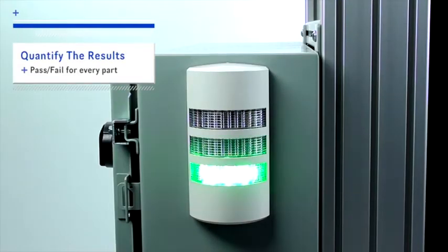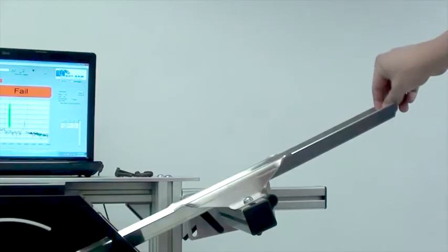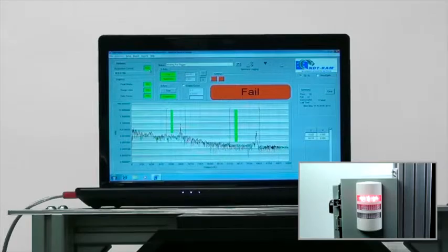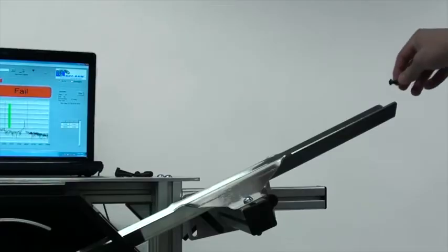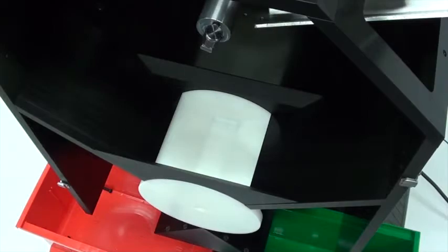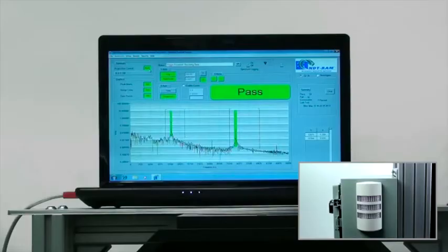This turnkey system provides two different visual indications of the part's performance. A light tower mounted on the side of the system will turn red if the tested part fails to meet any of the established criteria, and green if it meets all of the criteria. The attached PC also provides a simple pass or fail indication.